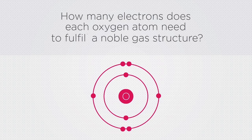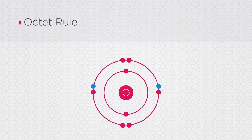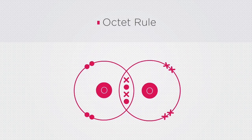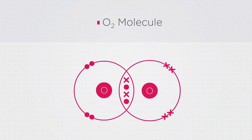The answer is that each oxygen atom needs two more electrons before fulfilling a noble gas structure. This is also called the octet rule. In this example, the octet rule is fulfilled because each oxygen atom shares two electrons in the outer shell, forming an O2 molecule.